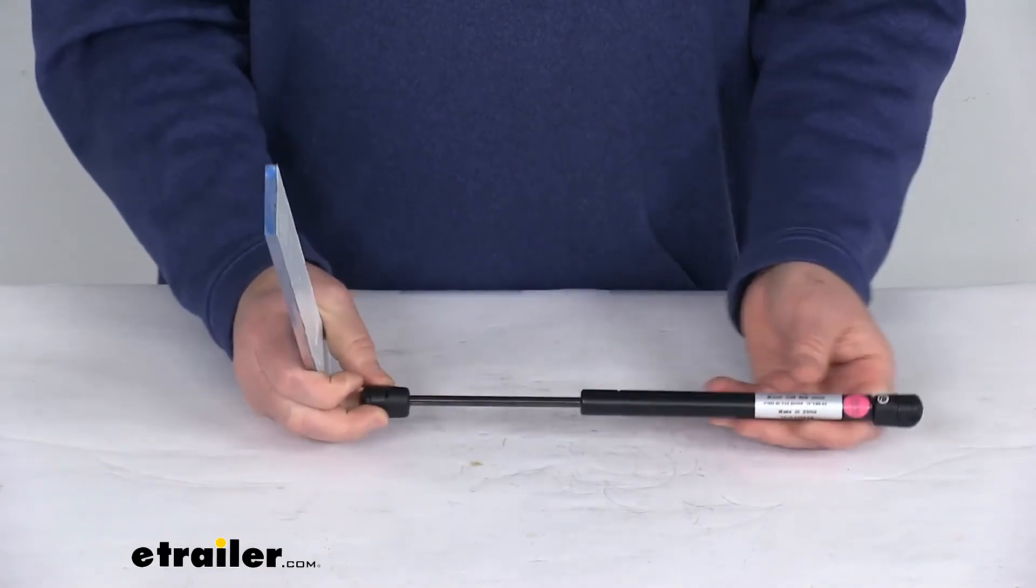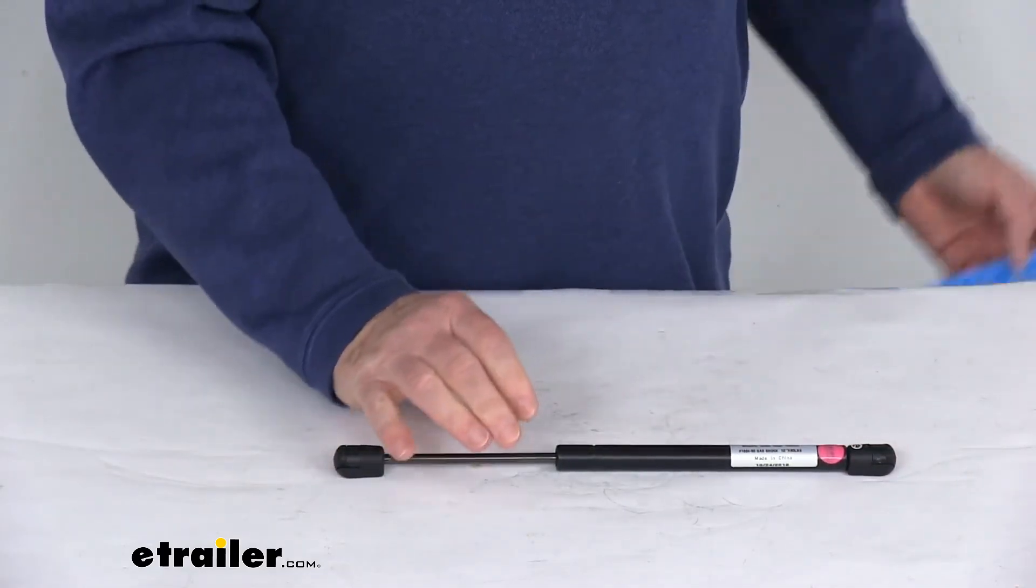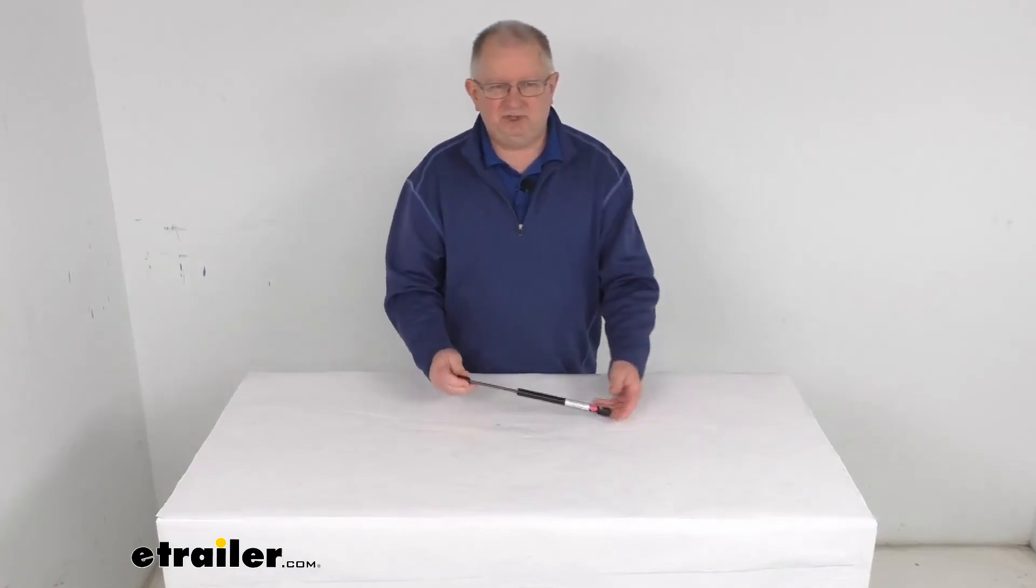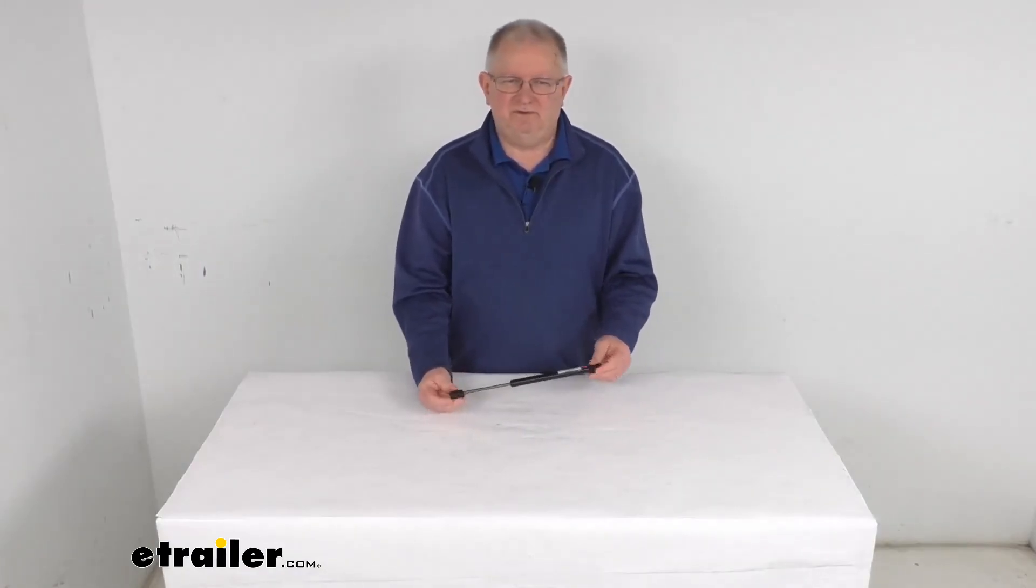Compression force on this is 60 pounds and it is for a quantity of one strut. But that should do it for the review on the TaylorMade 12 inch long steel gas strut for boat hatches.